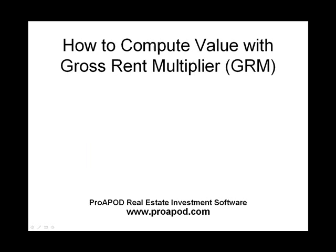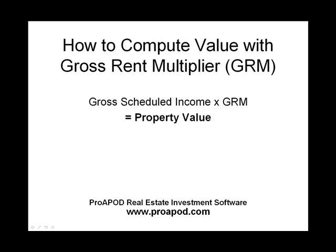You can also use gross rent multiplier to compute property value by multiplying its GSI by a GRM. For example, if a seller has asked you to suggest a sale price on a property that produces a gross scheduled income of $96,000, and you determine that similar properties have recently sold at a GRM of 7.5, you multiply those two numbers to compute the value.